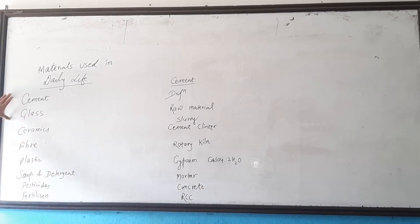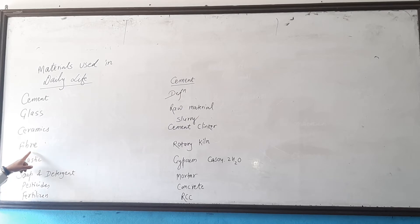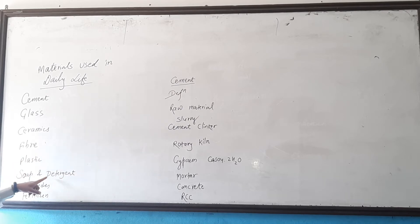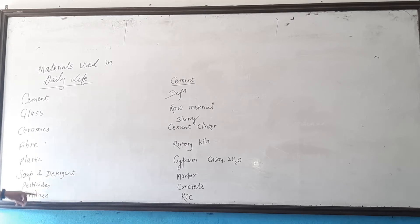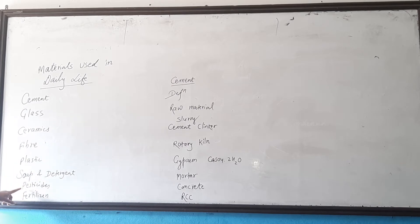So what type of materials are used in daily life? Cement, glass, ceramics, fiber, plastic, soap and detergent, pesticides, and fertilizers.